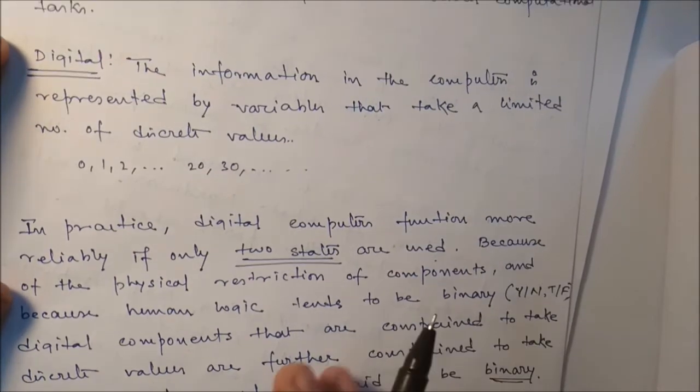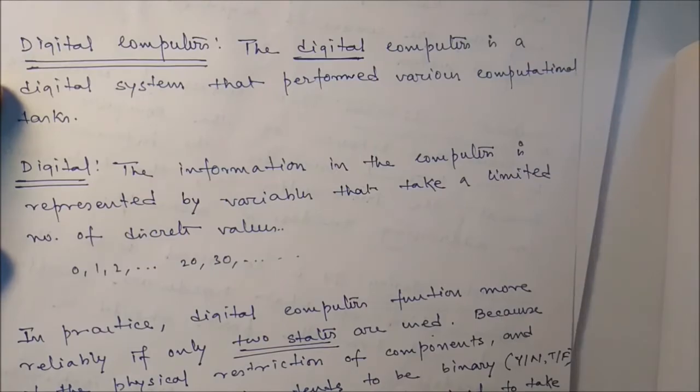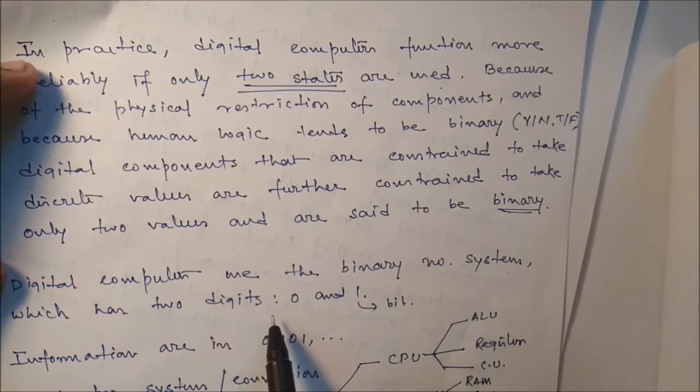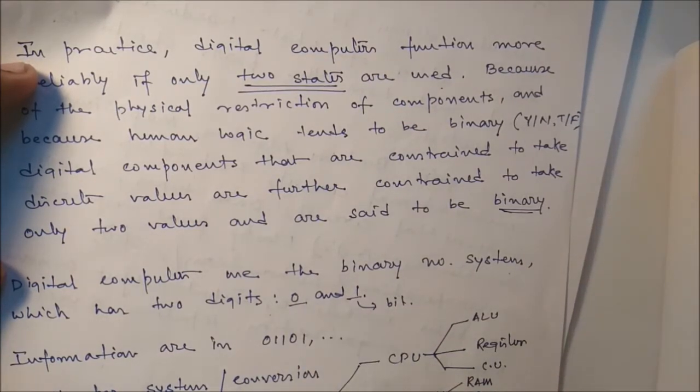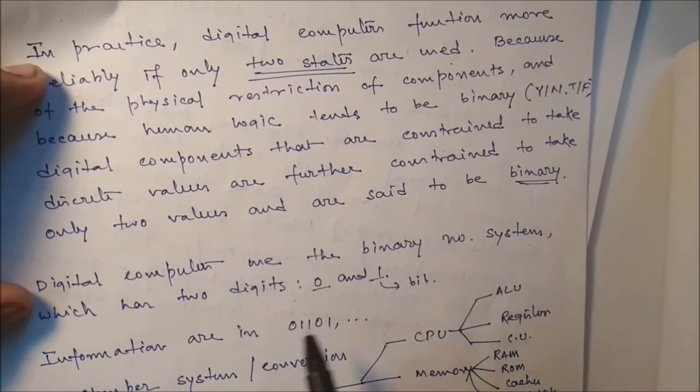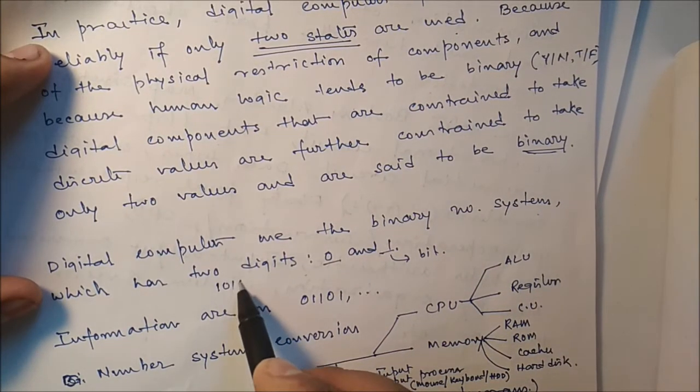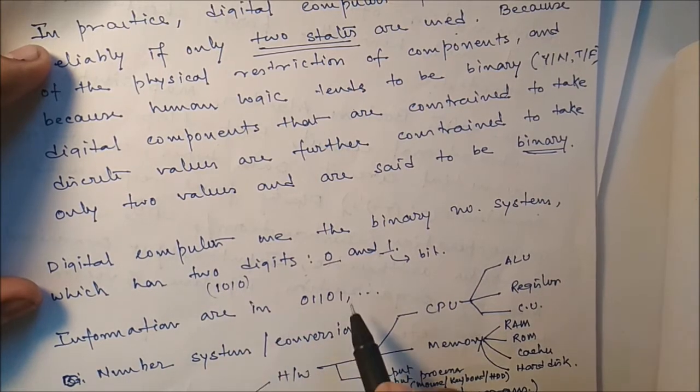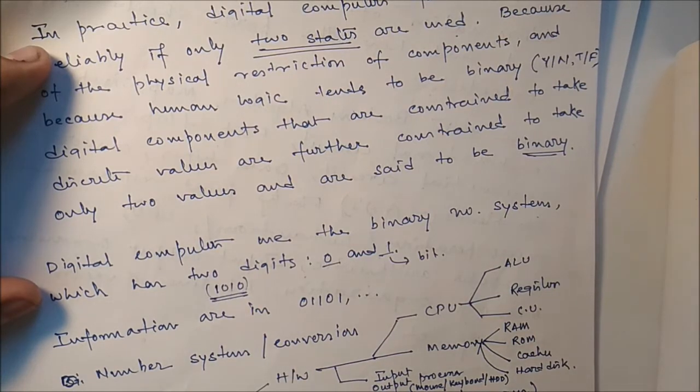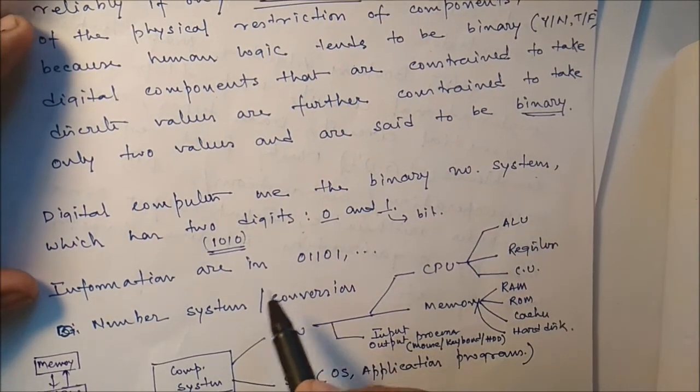Digital computers use the binary number system which has two digits: 0 and 1. Suppose you want to store information, say 10. The binary value of 10 is 1010. To store 10, we use this particular information - 1010. So we should learn the binary system.